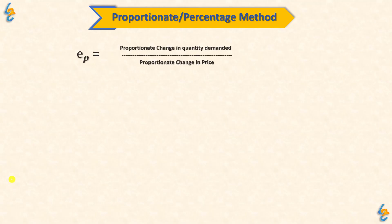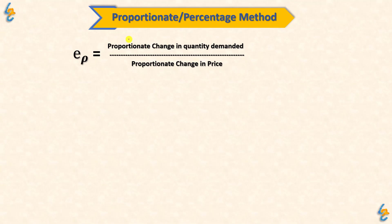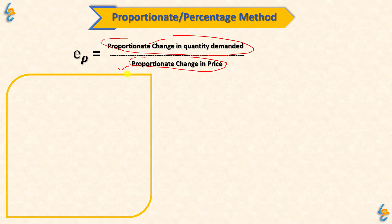We will start with Proportionate and Percentage Method. The formula is: Proportionate Change in Quantity Demanded upon Proportionate Change in Price. Now, some people may not know how to calculate the percentage change. Let's say any firm has a demand for a product — the demand is 100.